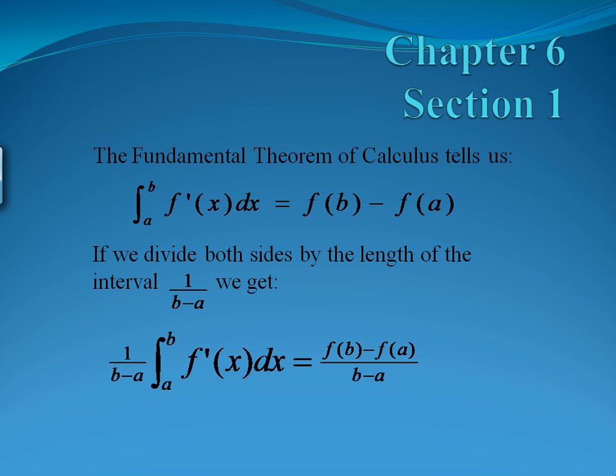Notice that what we have on the right is what we call the average rate of change of a function, something we learned about in Chapter 1.